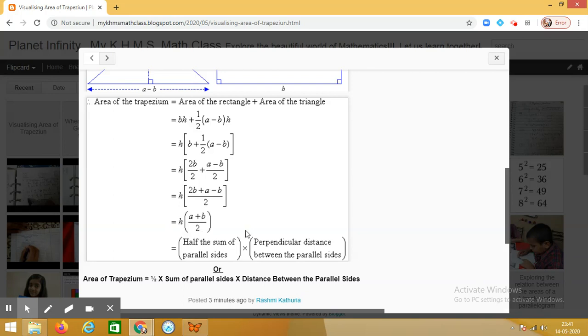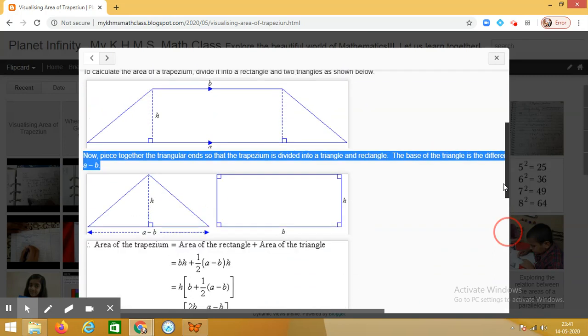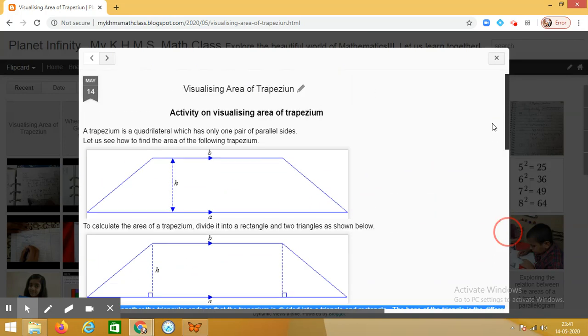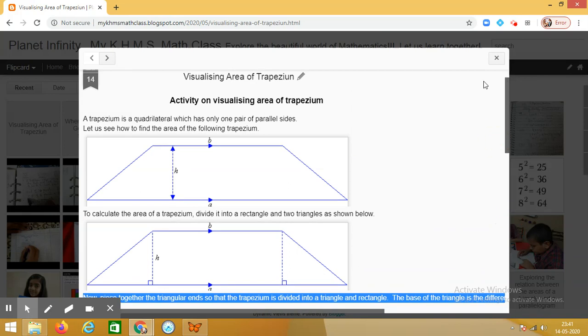We can say that area of the trapezium is equal to half into h into sum of the parallel sides. I hope it is clear to all of you. You do this activity in your notebook. Thank you.